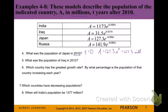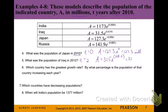What was the population of Iraq in 2012? That's two years after 2010, so we plug in T = 2 into the function. Doing the math in your calculator, it'll be around 327.2 million.